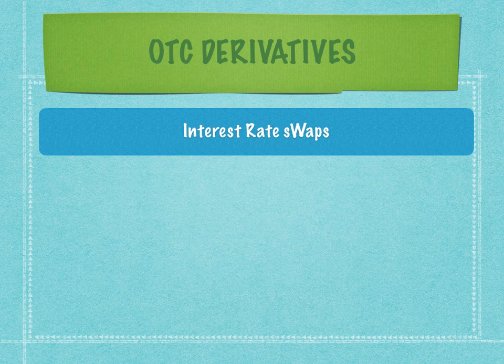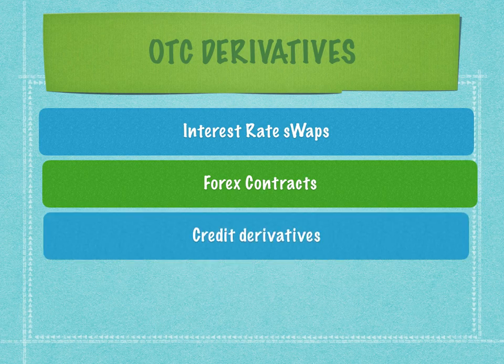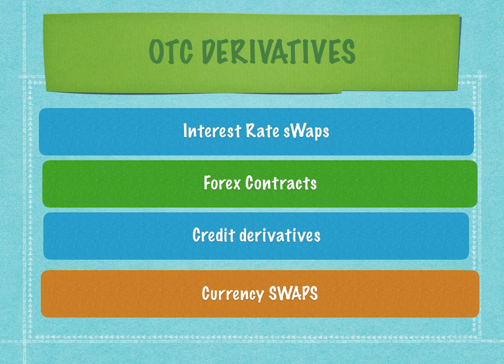Examples of OTC derivatives include interest rate swaps, forex contracts, credit derivatives like CDOs and CLNs, as well as currency swaps. It is important for us to understand what the settlement process is and what the elements of the OTC derivative ecosystem are.